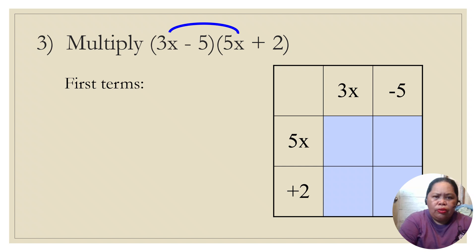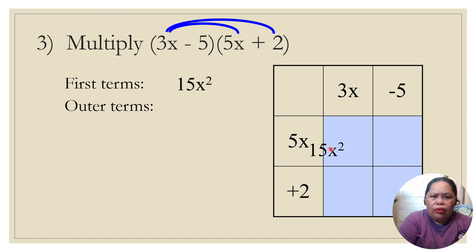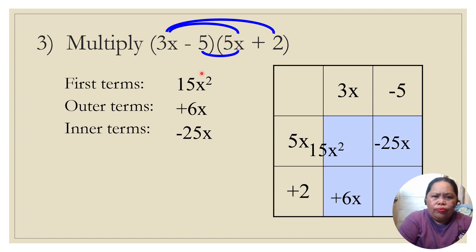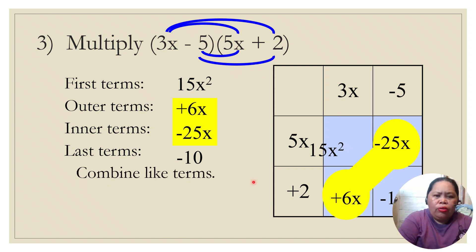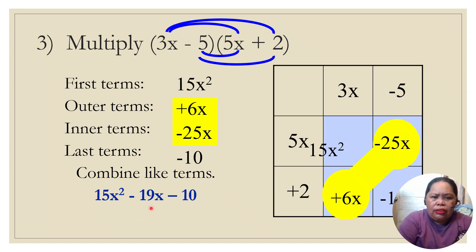The first terms: 5x times 3x is 15x squared. The outer terms: 3x times 2 is 6x. The inner terms: −5 times 5x is −25x. The last term: −5 times 2 is −10. Combining like terms: 6x plus (−25x) equals −19x. So the final answer is 15x squared − 19x − 10.